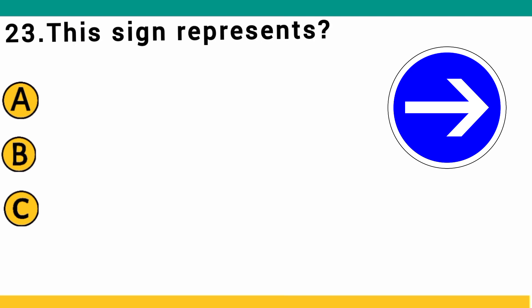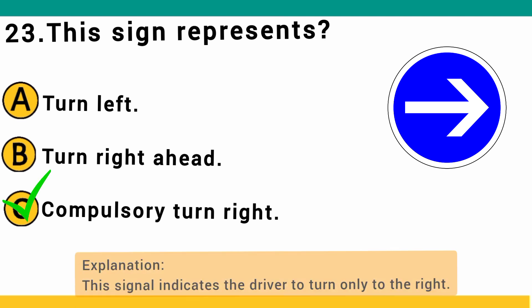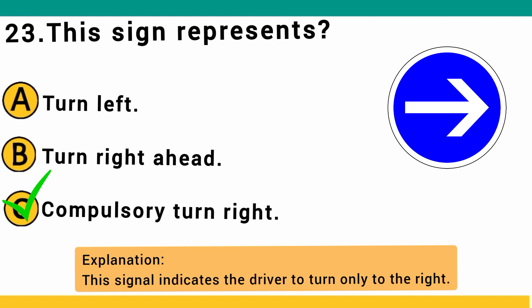This sign represents: A) turn left, B) turn right ahead, or C) compulsory turn right. The correct answer is C: compulsory turn right. This sign indicates the driver must turn only to the right.